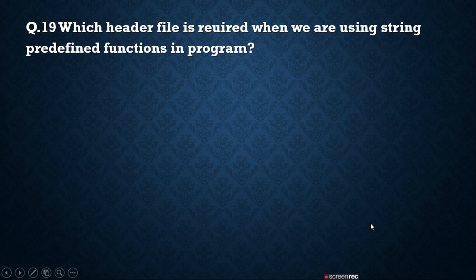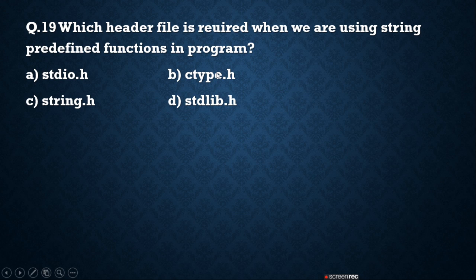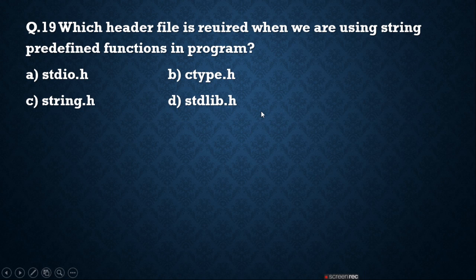Question number 19: which header file is required when using string functions in a program? Options: stdio.h, ctype.h, string.h, stdlib.h. stdio.h is for standard input/output. ctype.h is used when using functions like toupper or tolower. string.h is when you use string-related functions like strrev, strlen, strcmp, strchr. stdlib.h is for predefined library functions like exit(). So for string functions, you need to declare string.h header file.